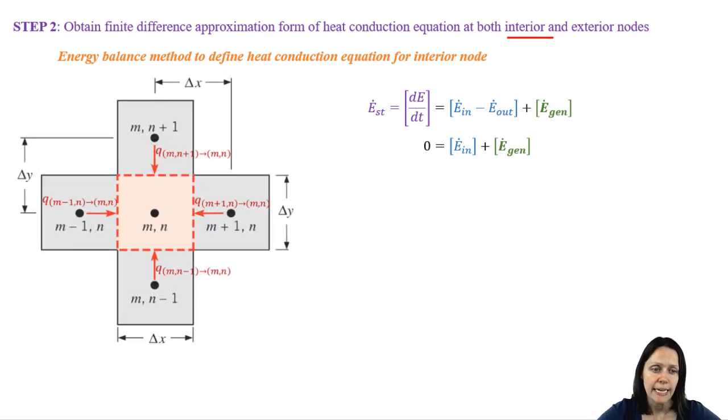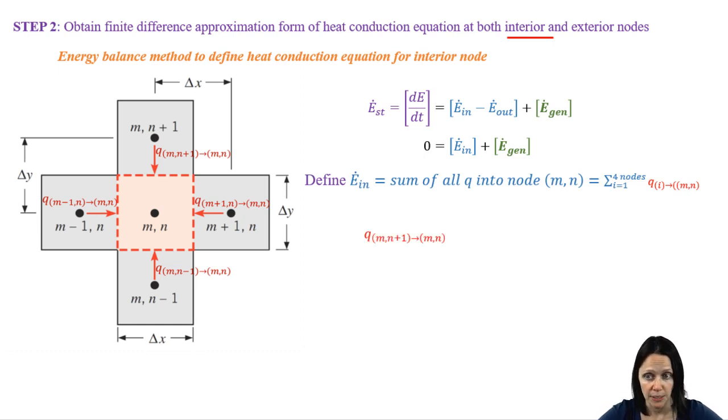We're going to give each of those vectors a name. So let's look at the top vector. We can see that this Q is coming from node MN plus 1 and going into node MN. We do the same for all the other vectors coming into node MN. Now we're ready to define the total rate of heat transfer going into the node MN, which means we need to add each of those vectors up. The first vector is coming from the north from node MN plus 1. We can apply Fourier's law. Note that we have dT/dY since the temperature gradient is being defined in the Y direction.